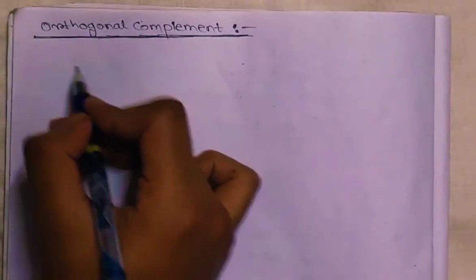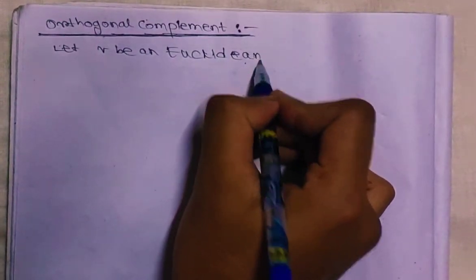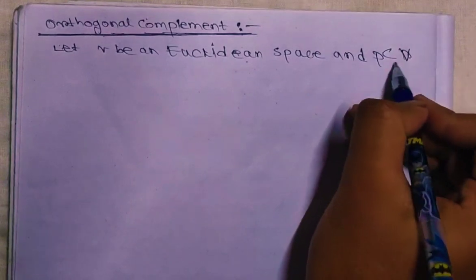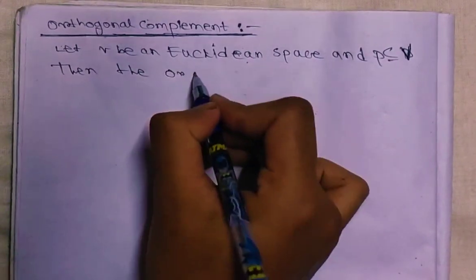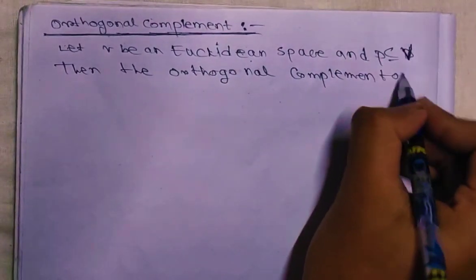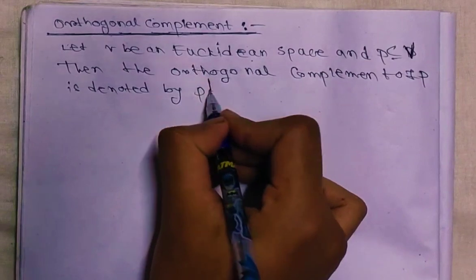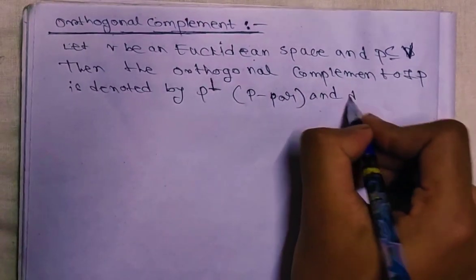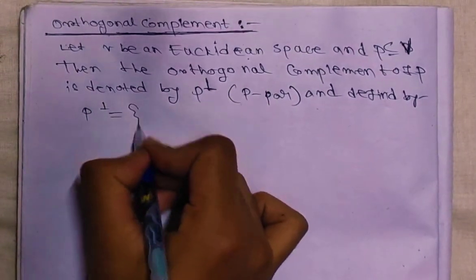Today we're going to start orthogonal complement. First of all, definition: let V be an inner product space and P be a subset contained in V. Then the orthogonal complement of P is denoted by P⊥.